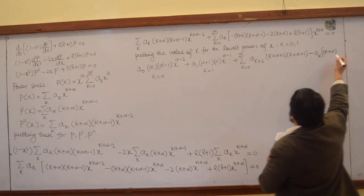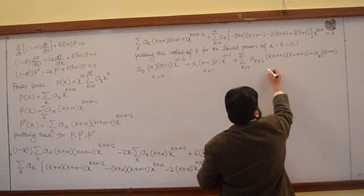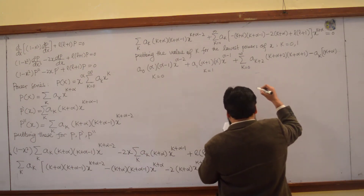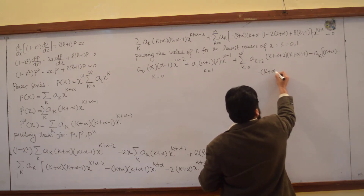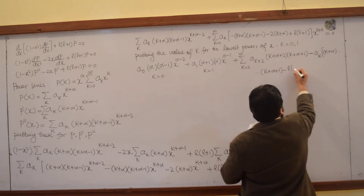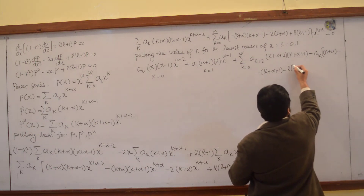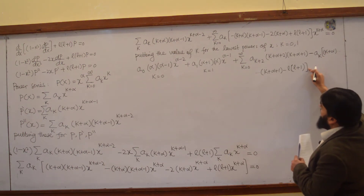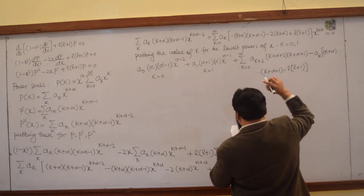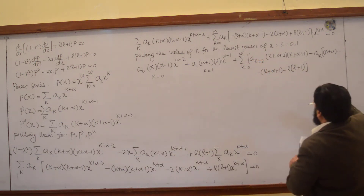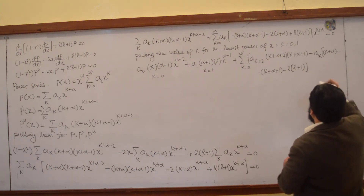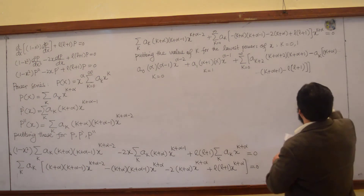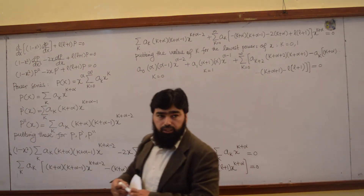This summation term is multiplied through, and this will be k plus alpha plus 1 minus l plus 1. I take minus a_k as common, multiplied by k plus alpha, times k plus alpha minus 1. The brackets close accordingly, and this whole expression is equal to zero.